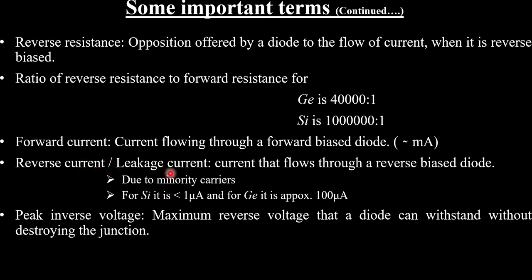Reverse current, or leakage current, is the current that flows through a reverse biased diode, of the order of microamperes, due to minority carriers. In a p-type semiconductor, holes are the majority carriers and electrons are the minority carriers. For silicon, leakage current is less than 1 microampere; for germanium, it is approximately 100 microamperes.